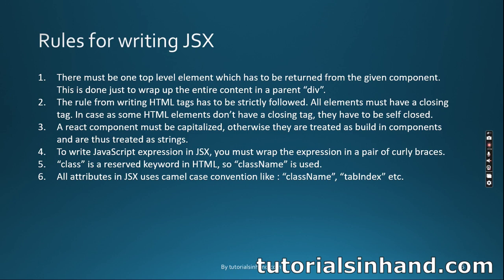Rule five: 'class' is a reserved keyword in JavaScript, so in JSX you must use 'className' instead. This is one of the most common mistakes beginners make — never write 'class' on a JSX element; always write 'className'. The behavior is exactly the same. Rule six: all attributes in JSX use camelCase convention. For example, 'className' has a lowercase 'c' and uppercase 'N'; 'tabIndex' has a lowercase 't' and uppercase 'I'.